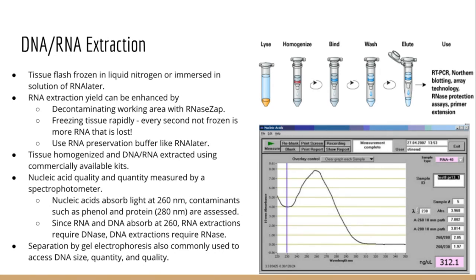RNA is also rapidly degraded by RNase enzymes in the tissue itself, so when extracting RNA all of these things need to be considered. There are a few very simple tips that can greatly increase your yield of RNA. First, make sure you are using copious amounts of RNAzap everywhere you go. RNAzap is a solution of RNase inhibitor — RNases are basically everywhere, flying out of your mouth, on your skin, floating in the air.